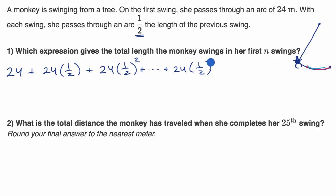Notice, after two swings, we only get to 24 times 1 half to the first power. After three swings, to the second power. So after N swings, to the N minus one power.